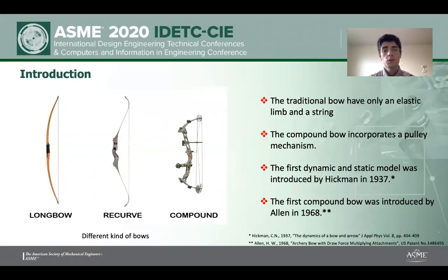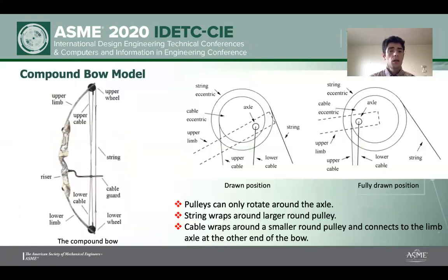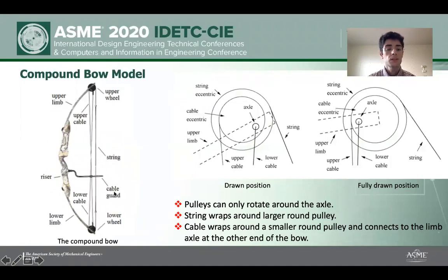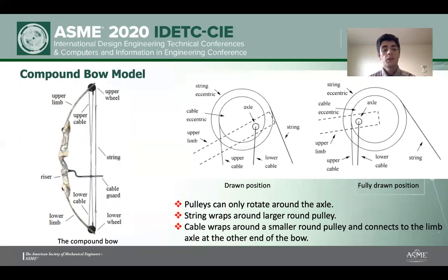In this study, we focus on the compound bow. Therefore, I would like to introduce the compound bow parts. The compound bow has a pulley system, cable, string, ring, limb, riser, and cable guard. The cable guard keeps cables away from the riser and helps the archer handle the compound bow.